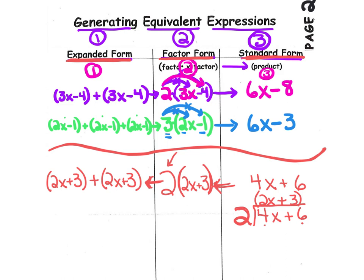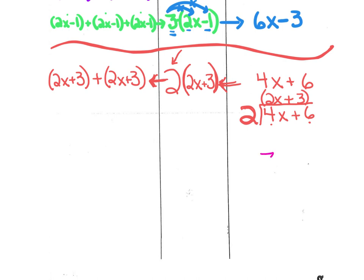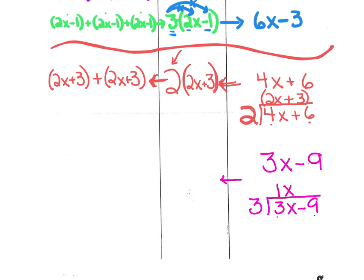Let's try one more together. Let's start with the expression in standard form: 3x minus 9. We need to factor out a common value, so we're going to divide as we move backwards. We're going to take 3x minus 9 and think about what common factor could be factored out of each of those terms. If you look at the 3 and the 9, the common factor is 3. 3 divided into 3x leaves us with 1x, and 3 divided into 9 is 3. So it's 3 times the quantity 1x minus 3.